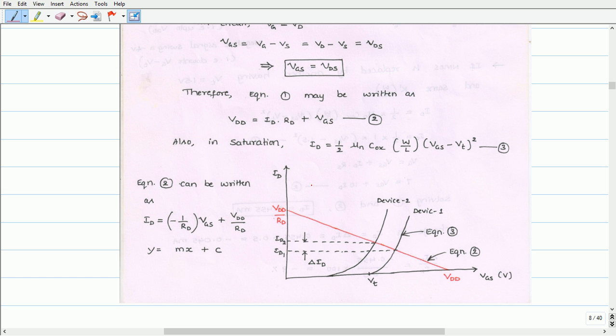The saturation current equation defined by ID given by equation 3 can also be drawn on this curve. As we have discussed earlier, for a batch of devices, μn·COX·W/L may vary due to which the device exhibits two different characteristics. If we replace in the original bias circuit with two different transistors, that may provide two different curves as shown here.